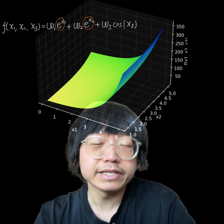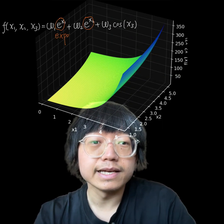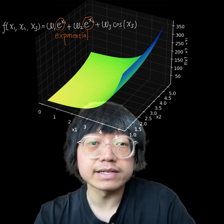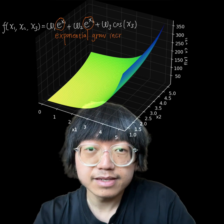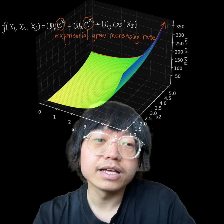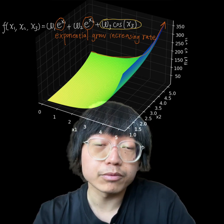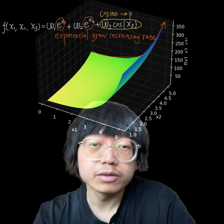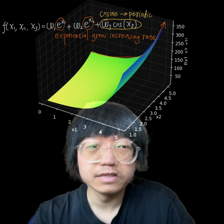The third function is f(x₁, x₂, x₃) = ω₁ times e to the power of x₁ plus ω₂ times e to the power of x₂ plus ω₃ times the cosine of x₃. The exponential terms, e^x₁ and e^x₂, provide a nonlinear effect as exponential functions grow at an increasing rate. The cosine term, cos(x₃), introduces a periodic behavior, which is a common nonlinear characteristic.